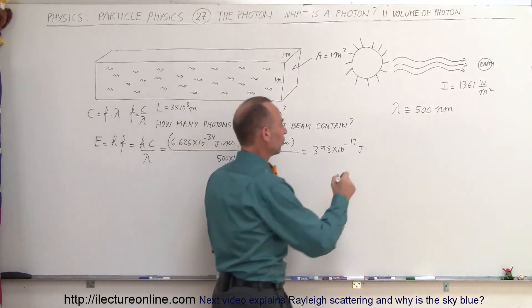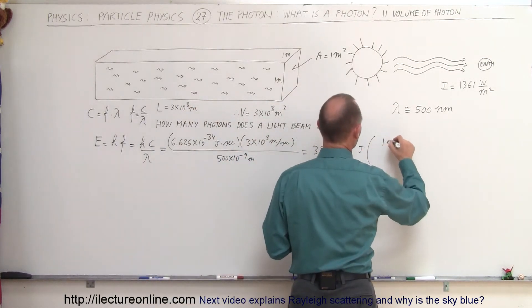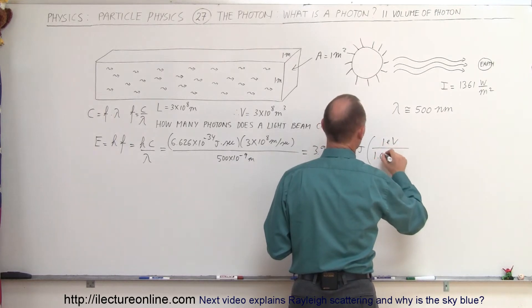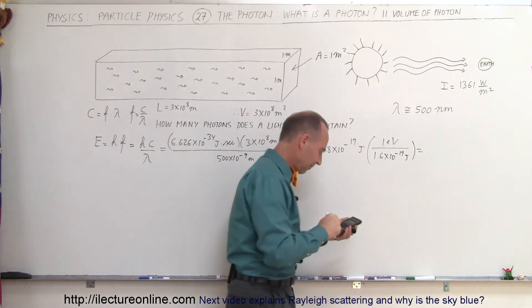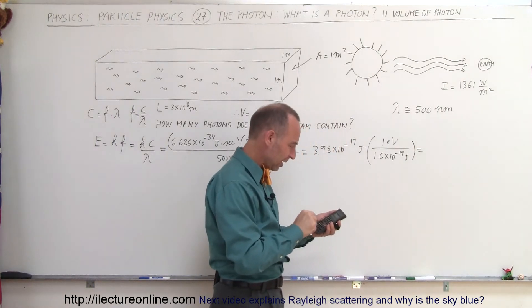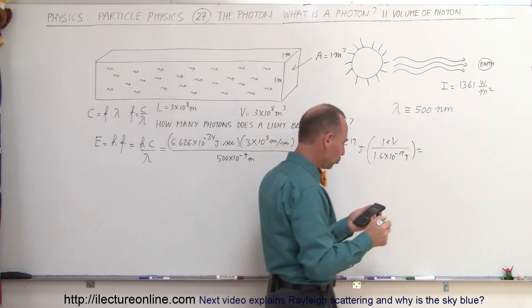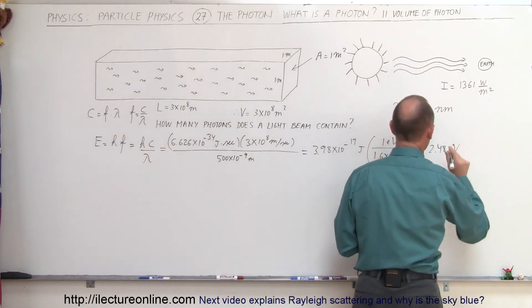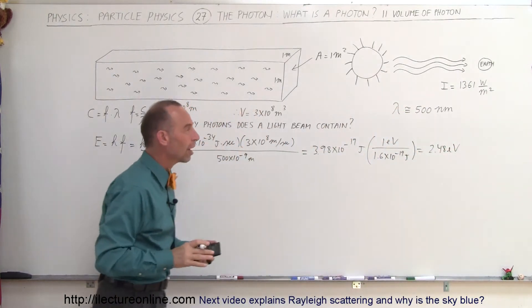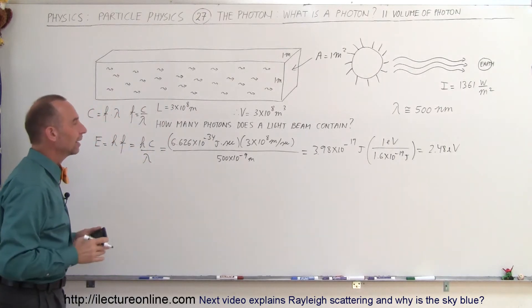Let's convert that to electron volts, just so we know what that is. So we have one electron volt per 1.6 times 10 to the minus 19 joules. So divide that by 1.6 e to the 19 minus, and that gives us about 2.48, 2.48 electron volts. So that is the energy of each photon, on average, in a beam of sunlight.